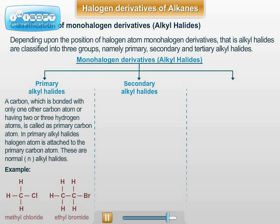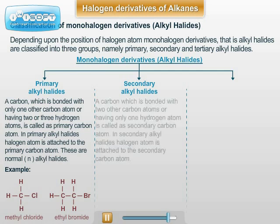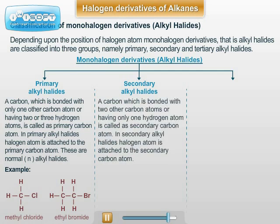2. Secondary Alkyl Halides: A carbon which is bonded with two other carbon atoms is called a secondary carbon atom. In secondary alkyl halides, the halogen atom is attached to the secondary carbon atom. For example: Isopropyl Bromide.